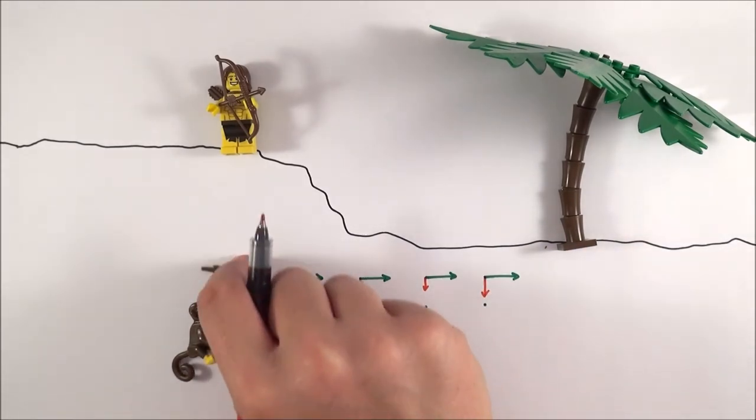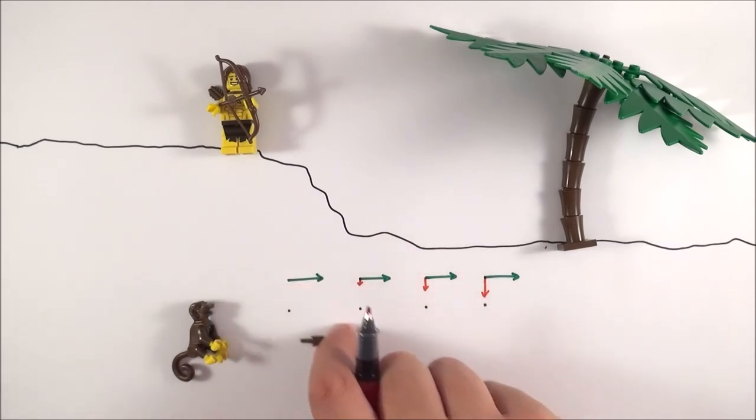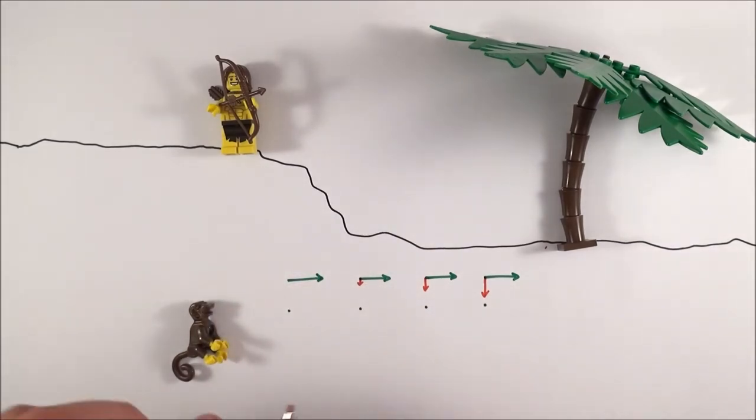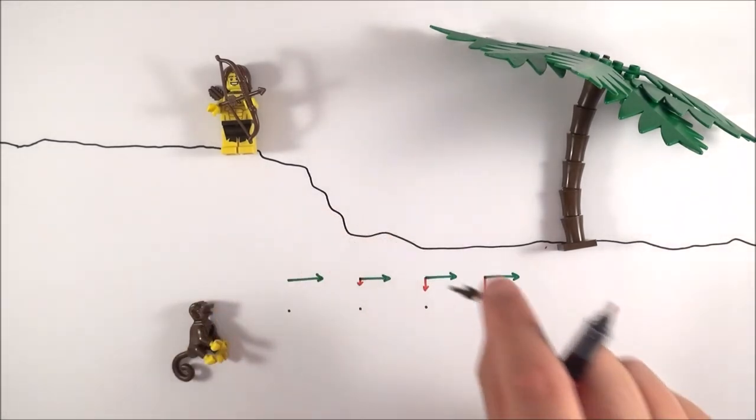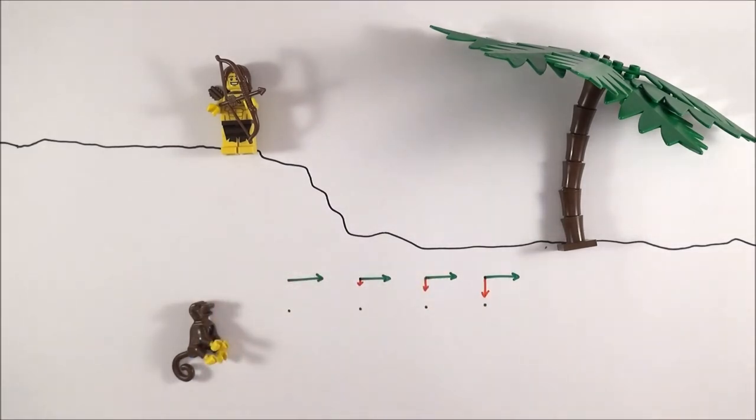As time goes on, the vertical component of velocity is going to get bigger and bigger. So for the arrow, it starts off falling quite slowly and as time goes on it gets quicker and quicker, and it follows this lovely parabolic path where it basically gets steeper and steeper.